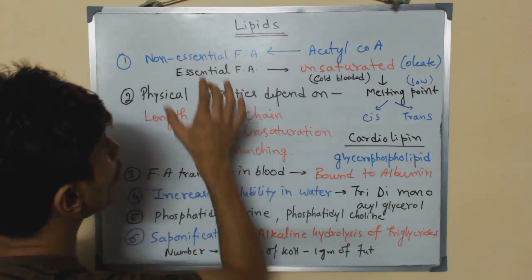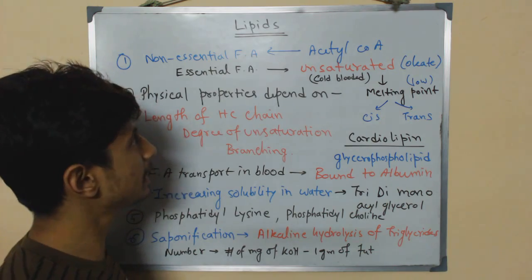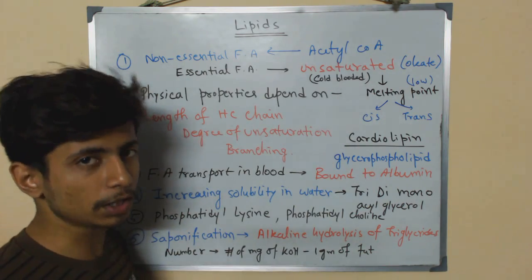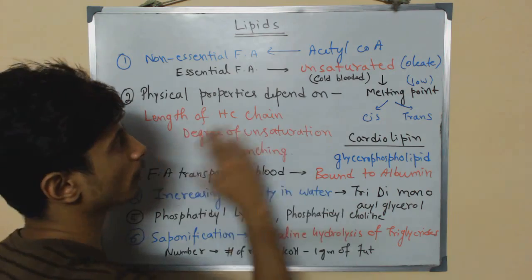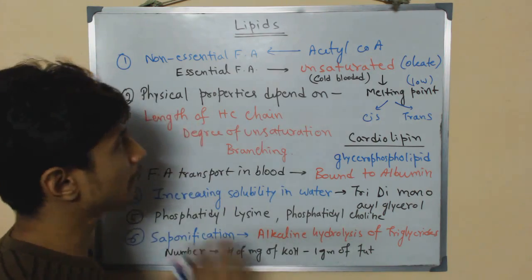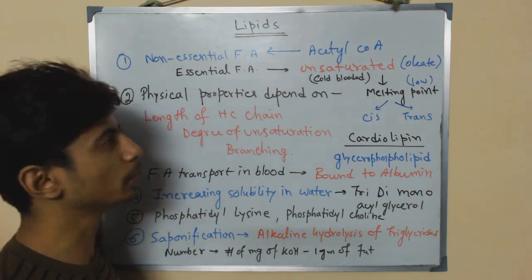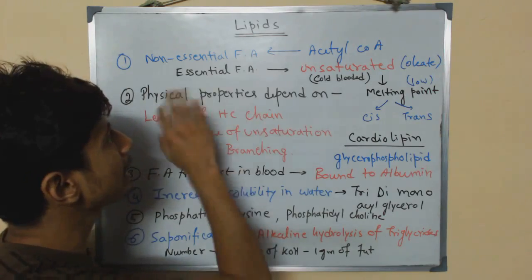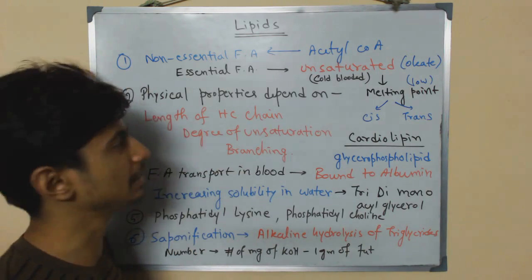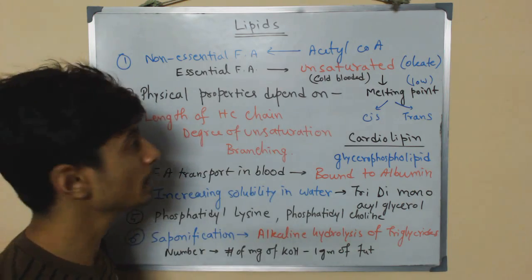All non-essential fatty acids can be produced from acetyl-CoA. However, the essential types cannot be produced from acetyl-CoA alone. Most essential fatty acids are unsaturated in nature.